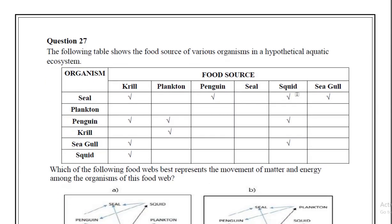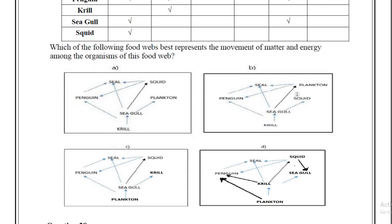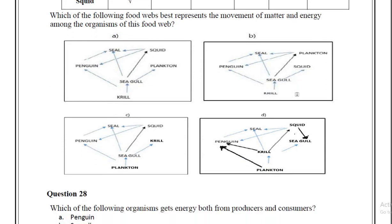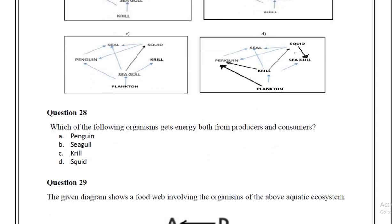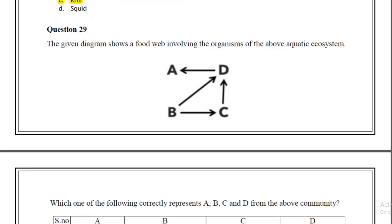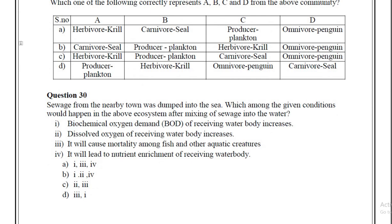For question number 27, the correct answer is D. It was a bit confusing between B and D, but the correct answer is D. For question number 28, the correct answer shall be Krill, option C. For question number 29, the correct answer should be option C. For question number 30, the correct answer should be D.